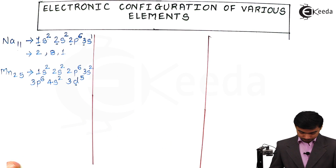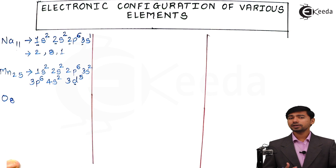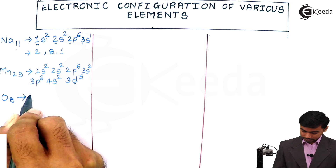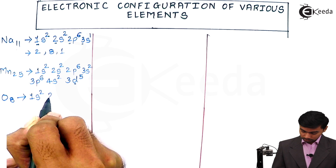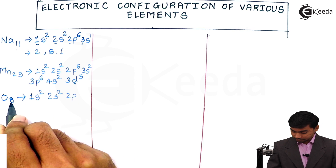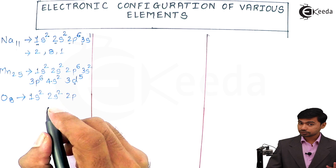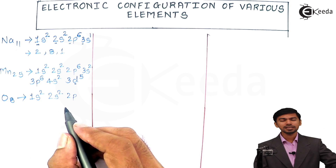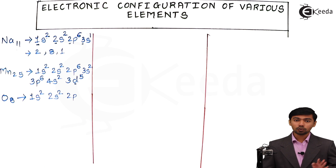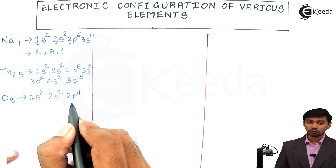Now let's take the example of oxygen, which has atomic number 8 — meaning 8 electrons. According to the Aufbau pyramid: 1s², 2s² — that fills 4 electrons, leaving 4 remaining. The p subshell has a capacity of 6, but only 4 electrons are remaining, so we place 2p⁴. The electronic configuration of oxygen is 1s²2s²2p⁴.